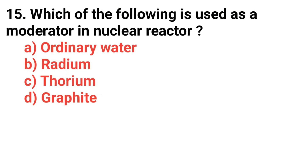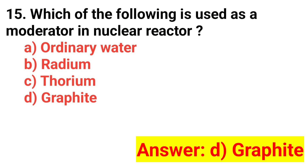Question number fifteen: Which of the following is used as a moderator in a nuclear reactor? The answer is option D: graphite.